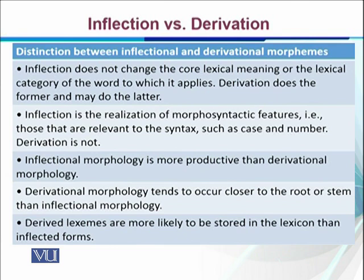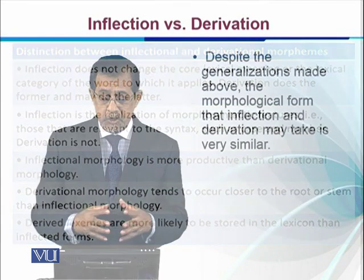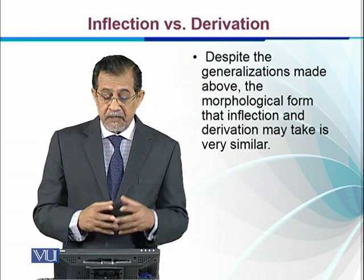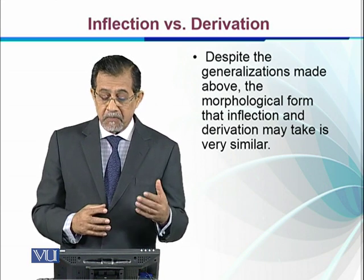Derived lexemes are more likely to be stored in the lexicon than inflected forms. Since inflected forms are many, they are not stored individually. But whenever we encounter or borrow a new word from another language, we add it to the lexicon.